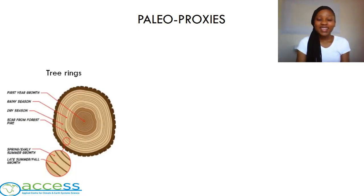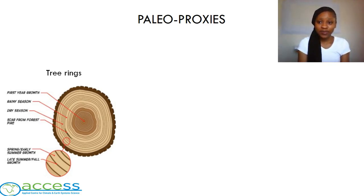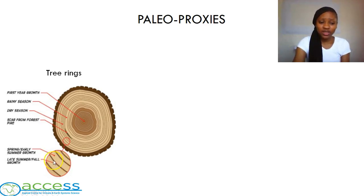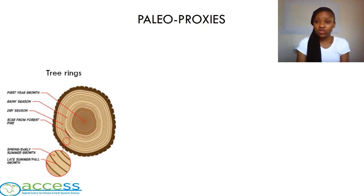Tree rings. The study of tree rings is known as dendrochronology. A tree is cut horizontally in order to expose the rings, and the size of the rings is what is being studied. The thicker rings, which are the lighter ones, suggest a rainy season and therefore optimal conditions for the tree to grow. The thinner rings, which are the darker ones, suggest a dry season and conditions that were not favourable for growth. A dark patch would suggest that there was a forest fire during that time. What we need to remember is that the tree rings are directly affected by the seasons.